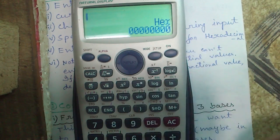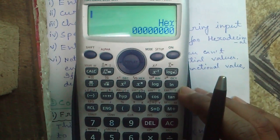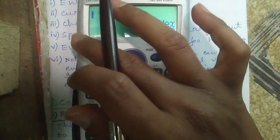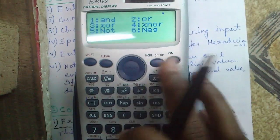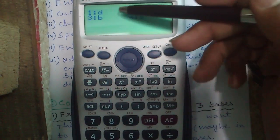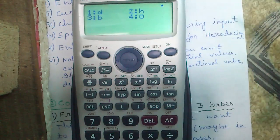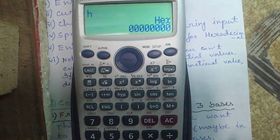Press shift and this f to the power button to get hexadecimal. And to change your source base, this is called source base, press shift and number 3. And press 1 for decimal, 2 for hexadecimal, 3 for binary and 4 for octal.